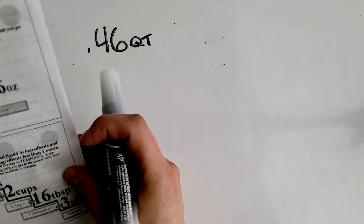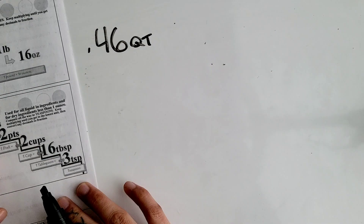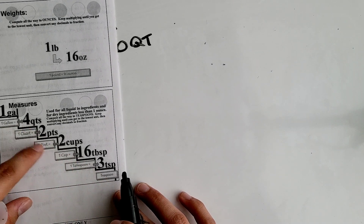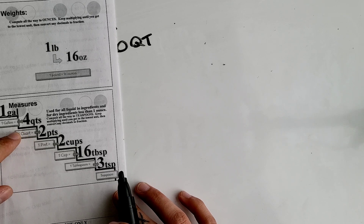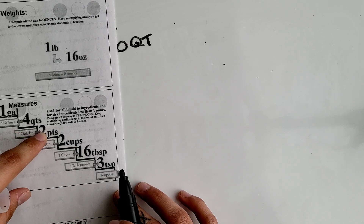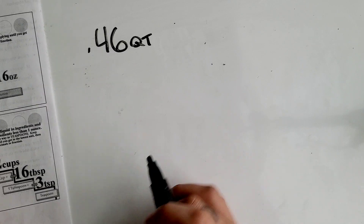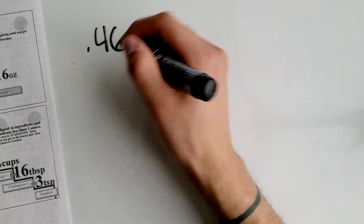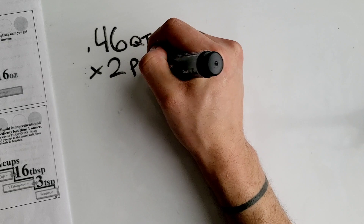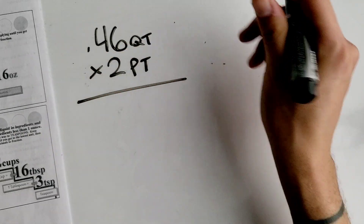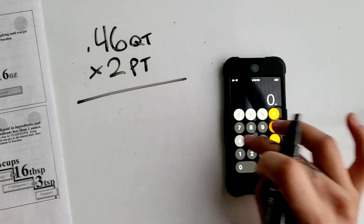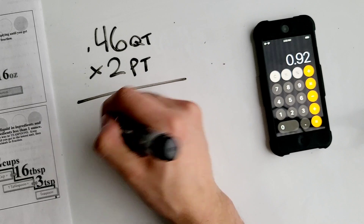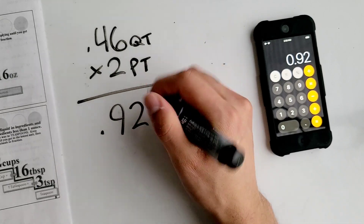We don't have a whole number here, so there's nothing to block off yet. When going back down the unit ladder, we multiply by the unit below. We're at quarts, so we multiply by 2 pints. 0.46 quarts times 2 pints equals 0.92 pints.